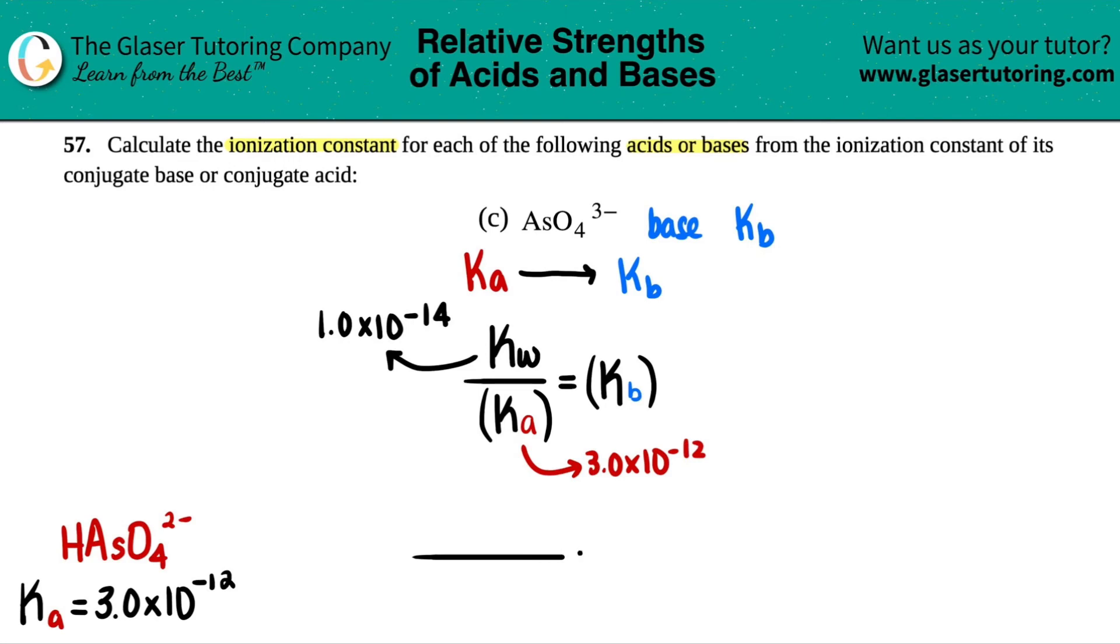Something divided by something equals Kb. 1.0 times 10 to the negative 14th Kw divided by the Ka 3.0 times 10 to the negative 12th. And then we arrive at our answer, Kb.